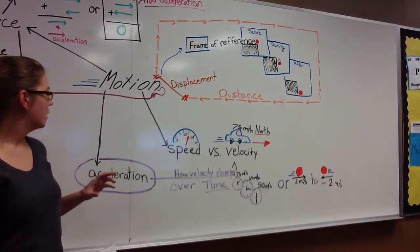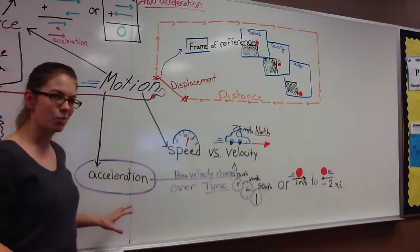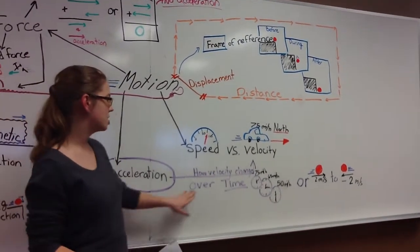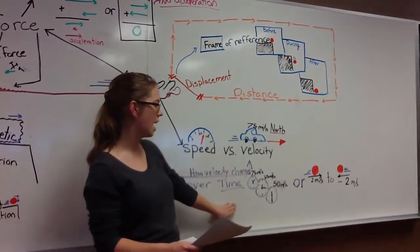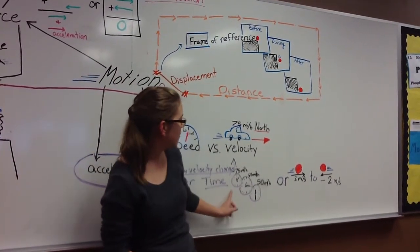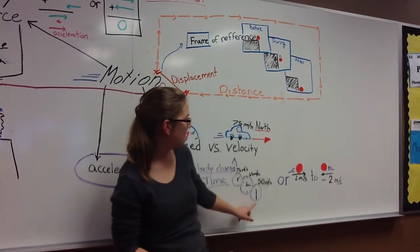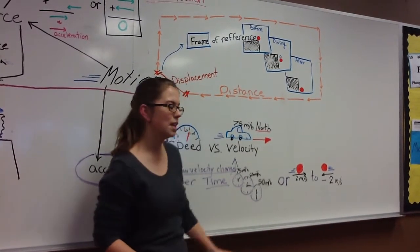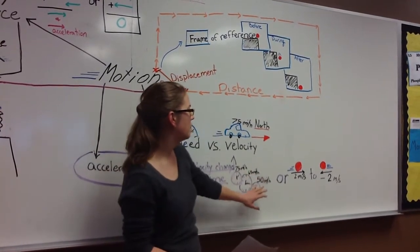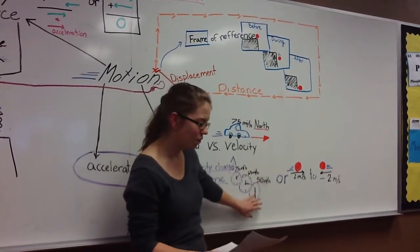Now, when velocity changes over time, that's called acceleration. Acceleration is how velocity changes over time. You can see in my first example here, there's a clock that's moving. 75 miles an hour, 65 miles an hour, 50 miles an hour. We're stepping on the brake, our acceleration is changing because our velocity is changing over time.